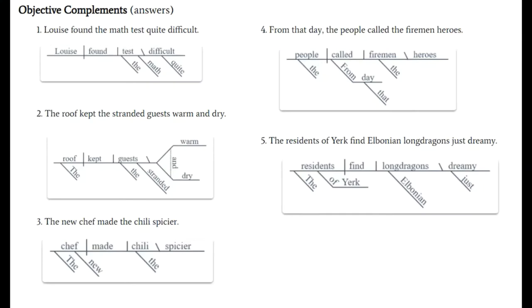And here are some answers and possible answers for our five statements. So we reviewed number one. Let's look at number two. The roof kept the stranded guests warm and dry. So here is a rewrite of the original sentence which said the guests were kept warm and dry by the roof. So in order to get an objective complement we need a direct object. So we make roof the subject doing the action. The roof kept what? Or kept who? Kept the guests. So there's our direct object. And here we have a compound objective complement, adjective style. Kept the guests how? Warm and dry.